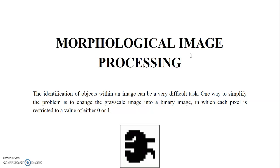Let's get started with what morphological image processing basically means. The term morphology means 'form' — a form of something. Throughout the chapter, we'll see that whatever operations we do, they basically focus on two things: number one, shape, and number two, structure of any object. These terms will make more sense as we move further.